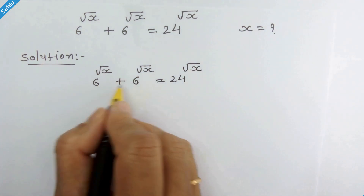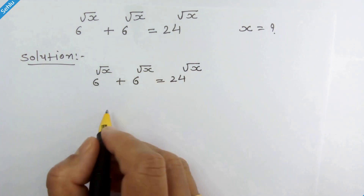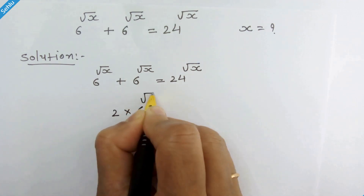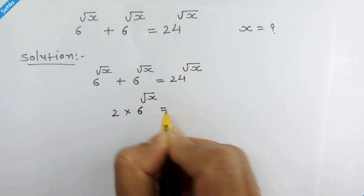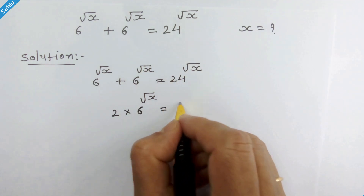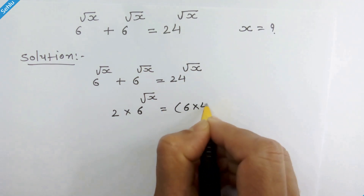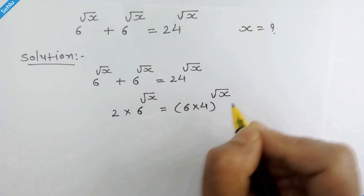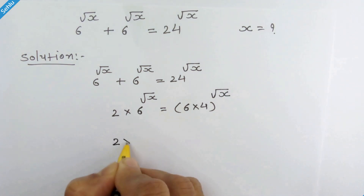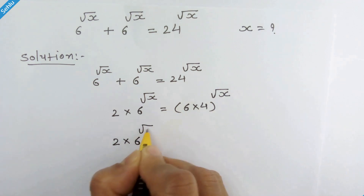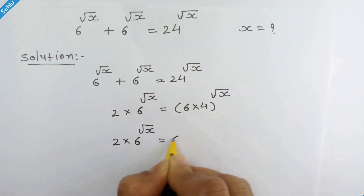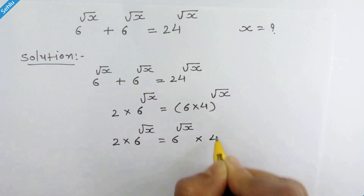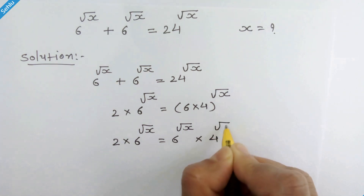Here we have 2 times 6 raised to square root of x. So we can write it as 2 times 6 raised to square root of x is equal to — and here 24 can be written as 6 times 4, whole raised to square root of x. In the next step we can write this as 6 raised to square root of x times 4 raised to square root of x.